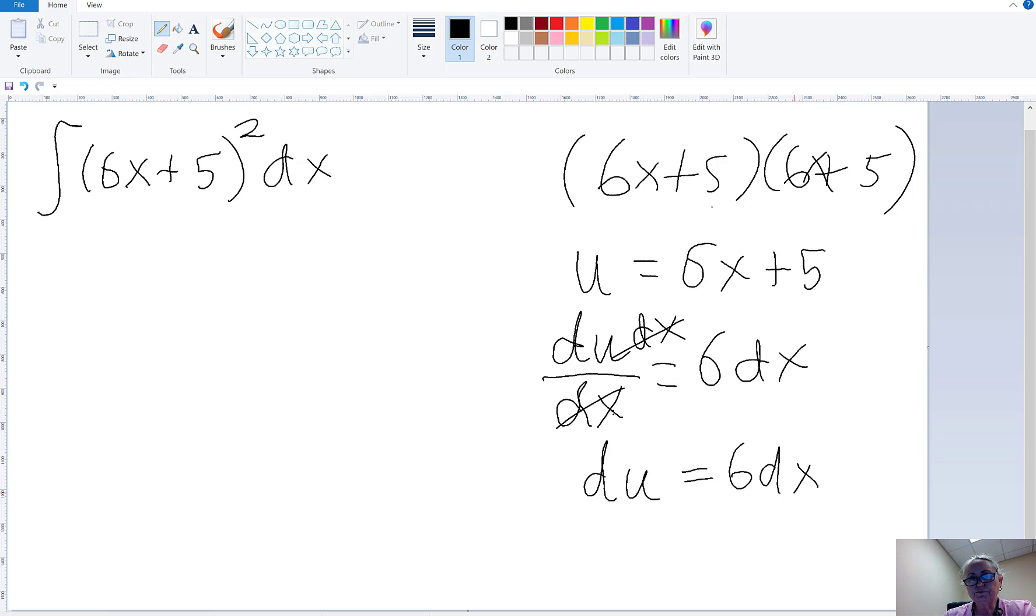Now, I'm going to substitute for the 6x + 5, I'm going to substitute the u, and that's going to be the second power. Now, for dx, this is with respect to u, so I'm going to need a du, so I've got to put in this du, but the problem is I don't have a dx. I have a 6dx.